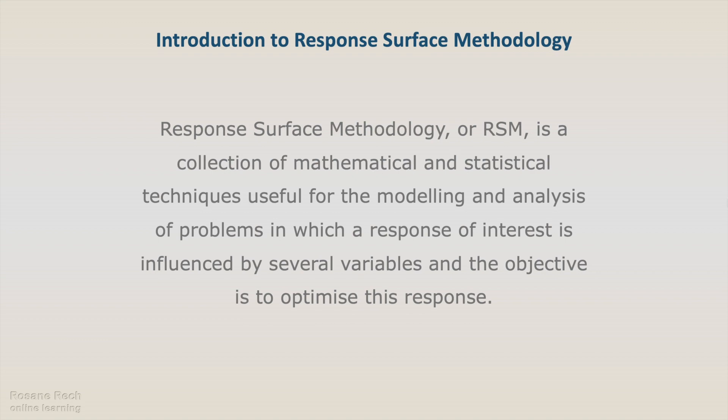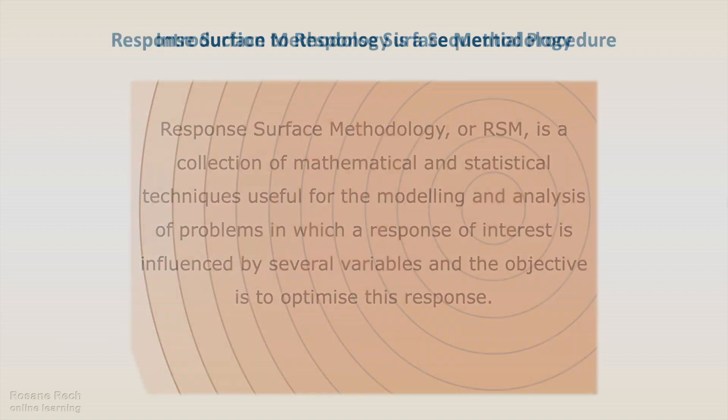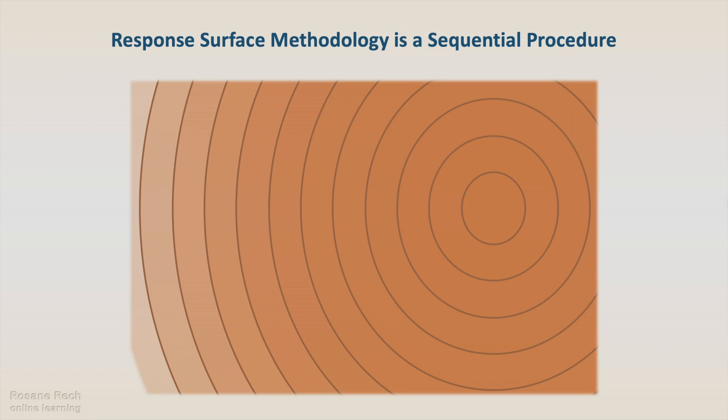The objective is to maximize this response. The slide shows an experimental region where the response increases as the color becomes darker. Let's imagine that we have designed our first experiment, utilizing a 2^k design with central points, to understand the behavior of the system.